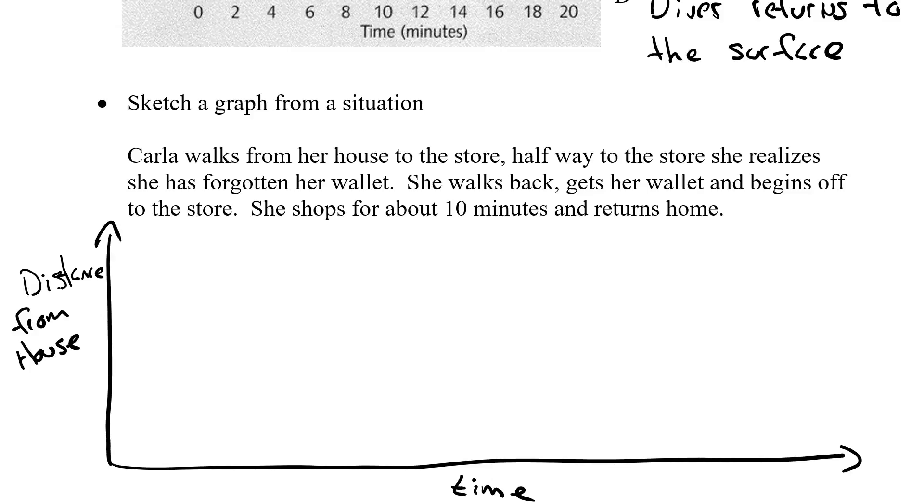So let's now sketch Carla. I'm going to change to a nice blue color here. Carla walks from her house to the store. So if she starts at her house, her distance from her house has to be zero. Now halfway, she realizes she forgets her wallet. So she's going to go from her house, walk to the store. And I'm going to get to a certain distance. I don't know what this distance is, but it's a distance. Halfway, she realizes she forgets her wallet. So it'll take her a second to forget her wallet. She'll stop, maybe check her pockets to see if she has it. So a very, very small time is going to pass where she's not moving from her house.